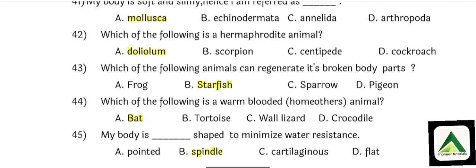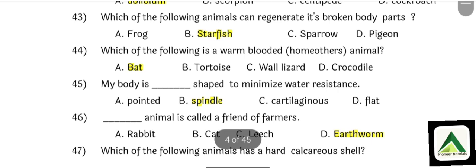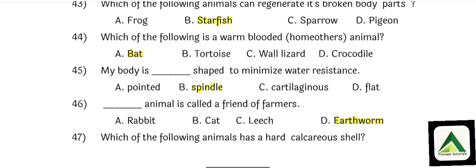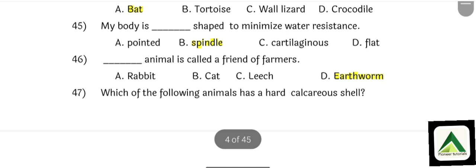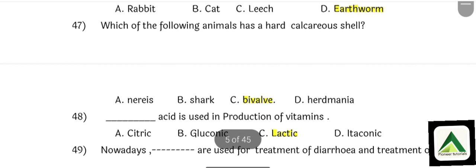Question number 43: Which of the following animals can regenerate its broken body part? That is option number B: Starfish. Question number 44: Which of the following is a warm-blooded animal? That is option number A: Bat. Question number 45: My body is spindle shape to minimize water resistance.